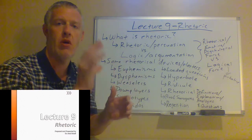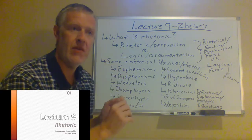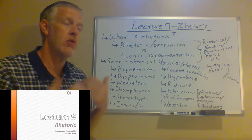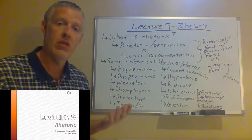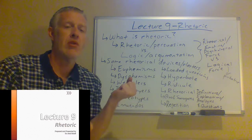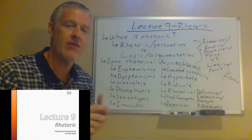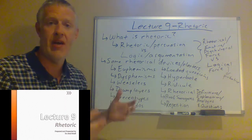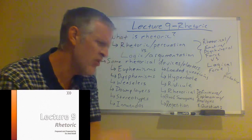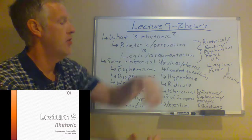We've set aside our specific focus on arguments from Section 2 and started talking about related issues that aren't argument-specific but things we need to be on guard against. In Lecture 7 we discussed clarity — ambiguity, vagueness, and so on. In Lecture 8 we talked about credibility: as claim filters, when we should be especially suspicious of certain claims or sources. And in this final lecture of Section 3, we turn our attention to the idea of rhetoric.